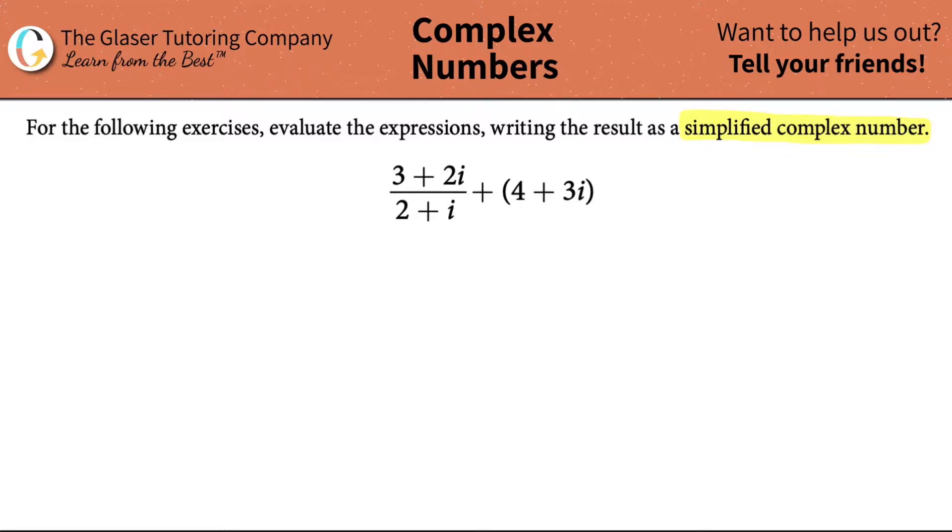So without further ado, let's get down to business. We need to simplify this whole mess. We need to simplify (3+2i)/(2+i), and then it's all being added to (4+3i). I'm looking at this from a simplifying standpoint and I want to see what am I going to do first. I know according to PEMDAS that multiplication and division comes first before I add this stuff out. So I know that I have to work with this first.